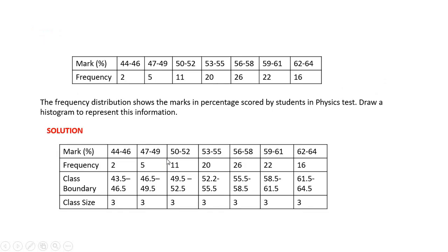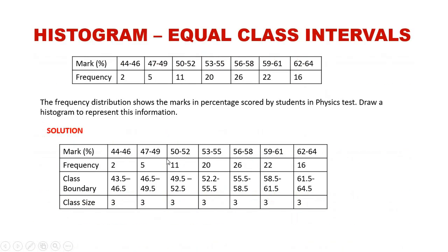Let's get to the examples. Example one shows where you have equal class intervals. We have a frequency distribution showing the marks in percentage scored by students in a physics test, and we want to use a histogram to represent this information.